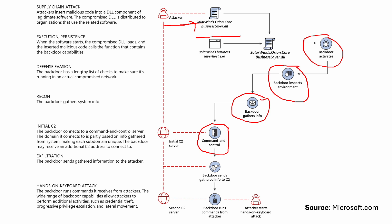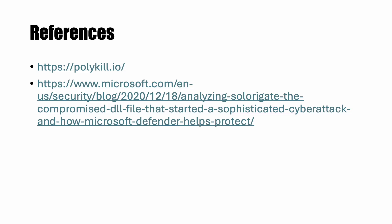The attackers were able to gather information and give commands to control the compromised systems from a remote server. The backdoor sent gathered information to the C2 center and ran commands from the attacker. As you can appreciate, this was a very critical attack affecting all systems running the Orion software. References will be provided in the description.